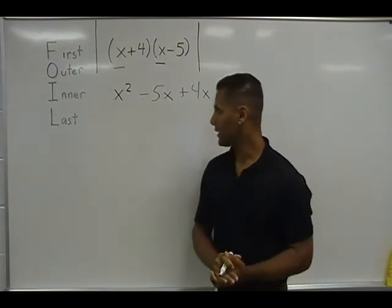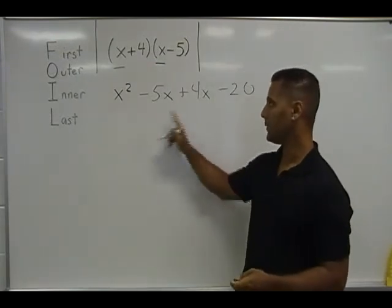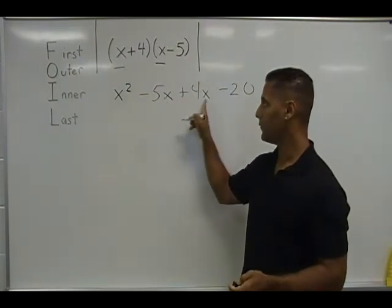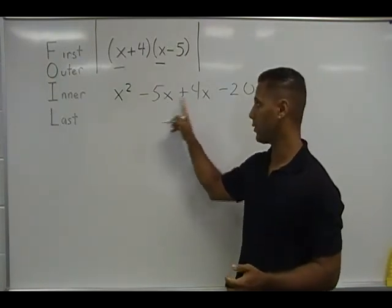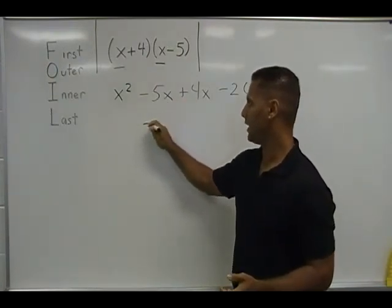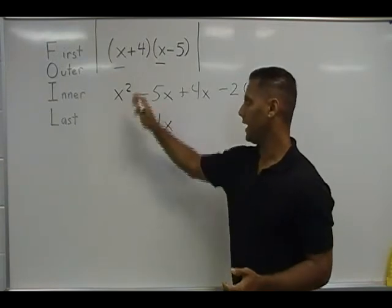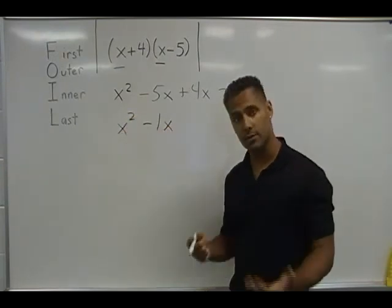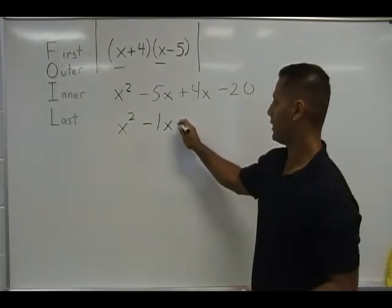And of course, the only like term we have here is an x value. Negative 5x and positive 4x, when putting those together or combining them, gives us negative 1x. And x to the second power does not have any like terms to combine with, and nor does negative 20.